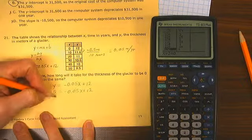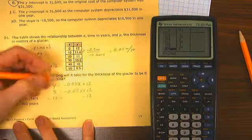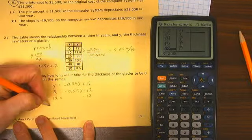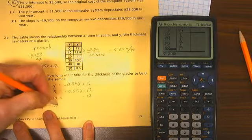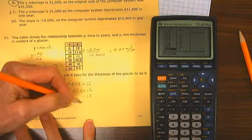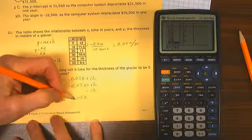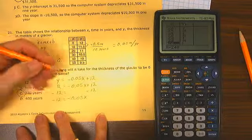Negative 0.05x plus 12, we subtract 12 from each side. That gives us negative 12 equals negative 0.05x.